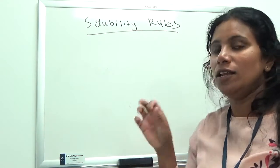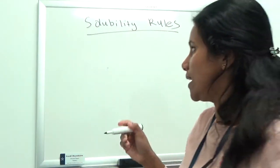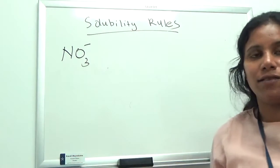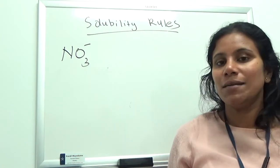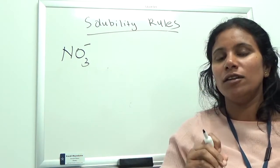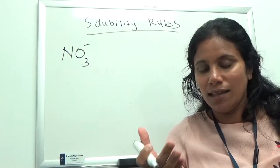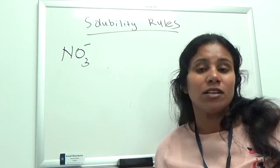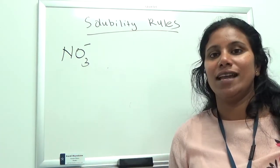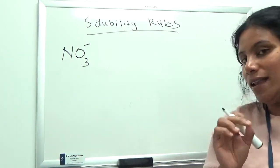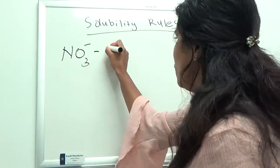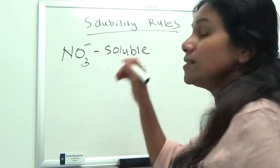If your compound contains nitrate (NO3⁻) — whether it's silver nitrate, potassium nitrate, or sodium nitrate — the compound is 100% soluble. So if I ask you: is calcium nitrate soluble or insoluble? You don't even need to look at the cation. The compound has nitrate, so it is completely soluble. Nitrate is always soluble and is considered a soluble anion.